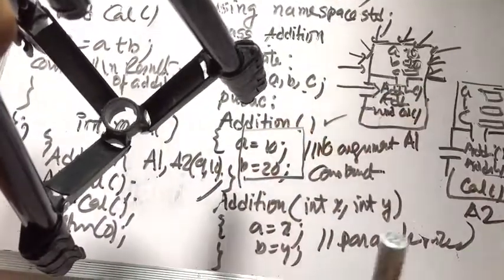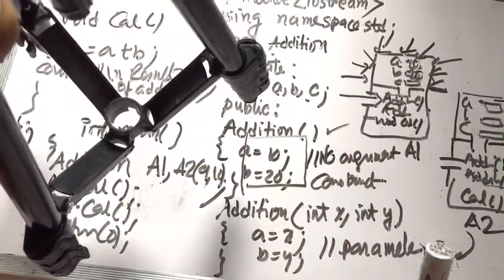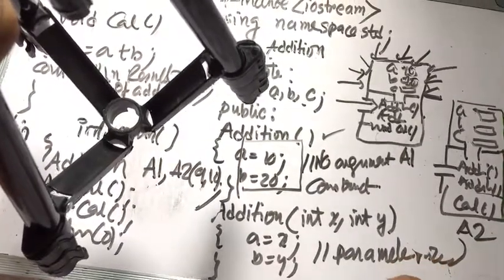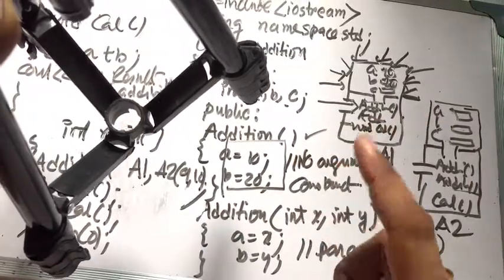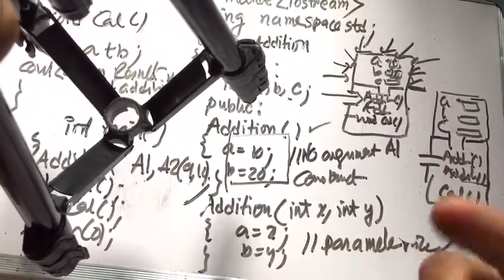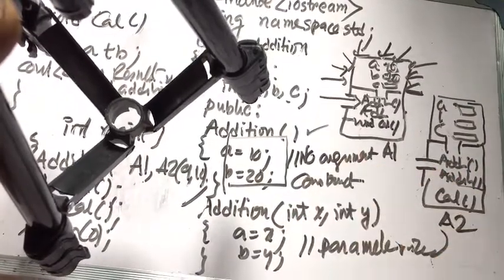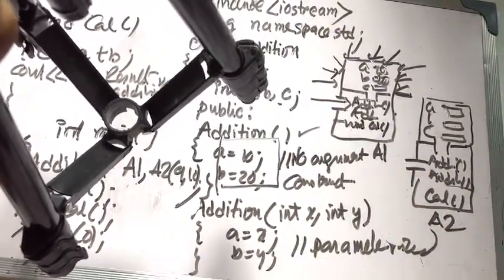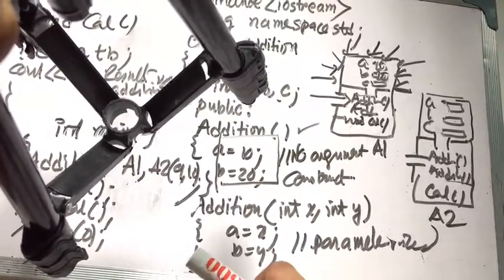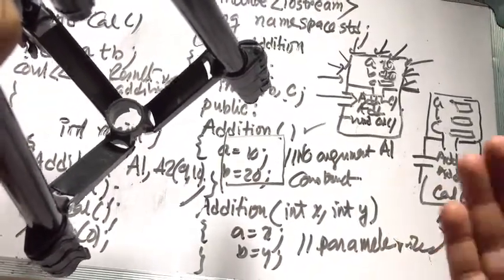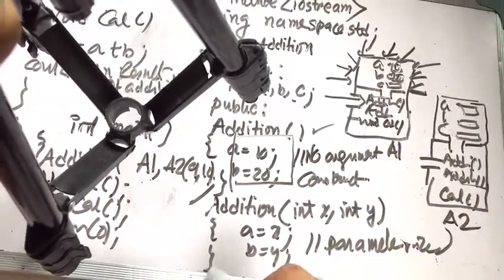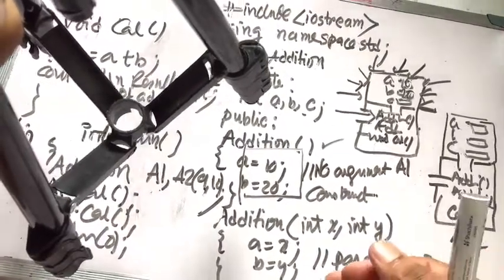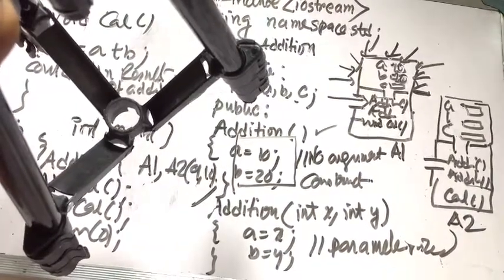When we allocate the object in memory, the constructor automatically initializes the memory. For example, like a bank account — when you open an account you initialize the balance to zero, but you can deposit money. That is the concept of constructor: used to initialize members during object creation.